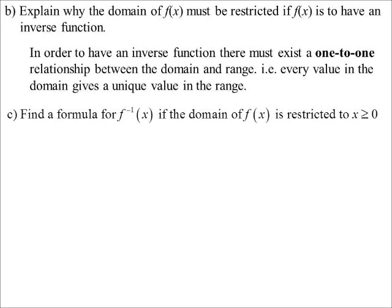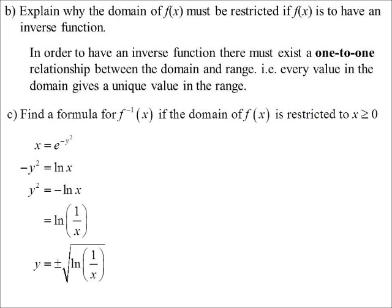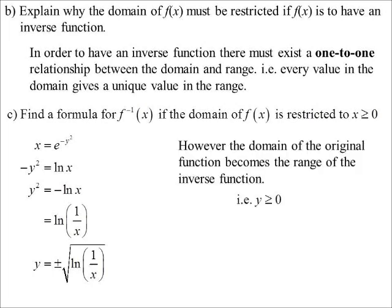Now we find the inverse, with the domain restricted to x greater than or equal to zero. Swapping x and y and making y the subject: minus y squared equals log x, so y squared equals minus log x. Moving the negative inside the log gives y squared equals log of one over x, and therefore y equals plus or minus the square root of log of one over x. Since the original domain was restricted to x greater than or equal to zero, the range of the new function must be greater than or equal to zero, so we need the positive square root: y equals the square root of log of one over x.